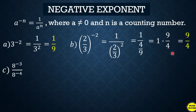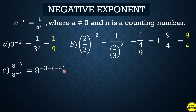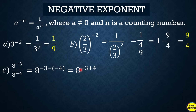Another example: 8 raised to negative 3 over 8 raised to negative 4. This uses the quotient rule — copy the base and subtract the exponents: negative 3 minus negative 4 becomes negative 3 plus 4, since negative times negative is positive. That gives 8 raised to 1, and the answer is 8.